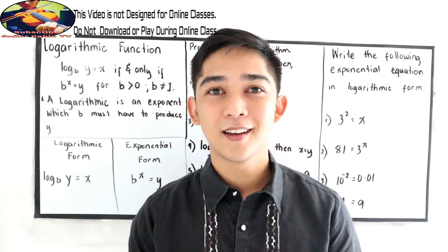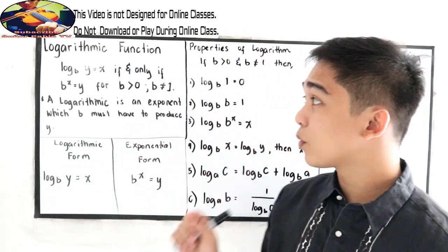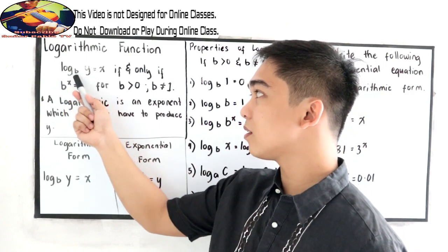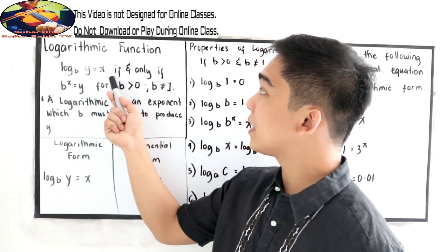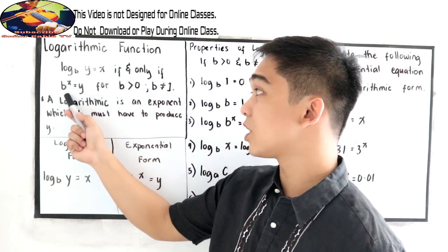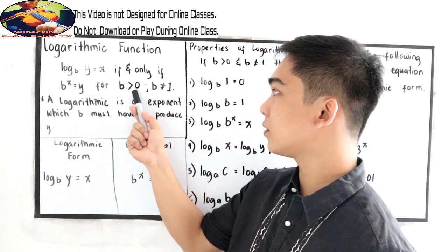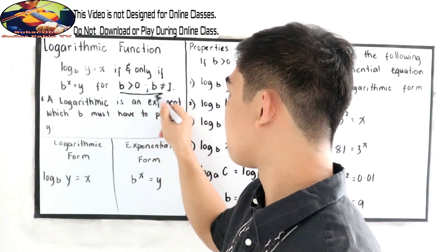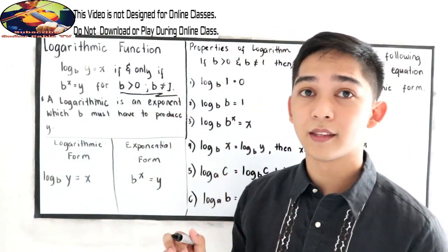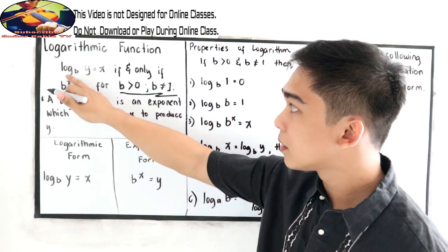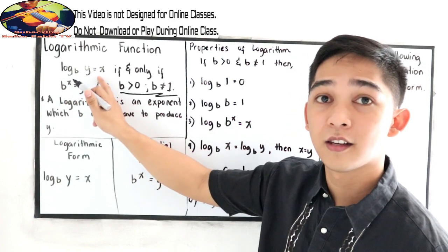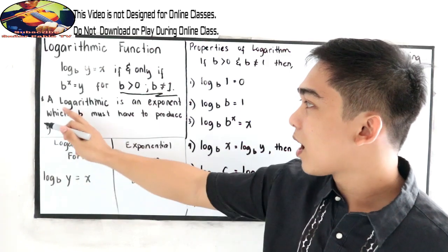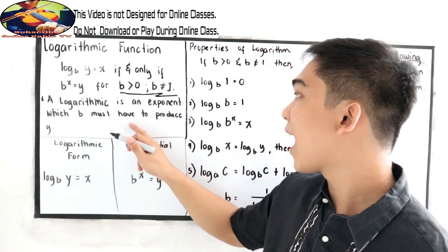Let's begin. First, let us define what a logarithmic function is. If we have log y base B is equal to x, if and only if B raised to x is equal to y, for B greater than 0 and B not equal to 1. This will be our condition: B is greater than 0 and B is not equal to 1. Then we arrive at the form log y base B is equal to x, which can be written in exponential form as B raised to x is equal to y.